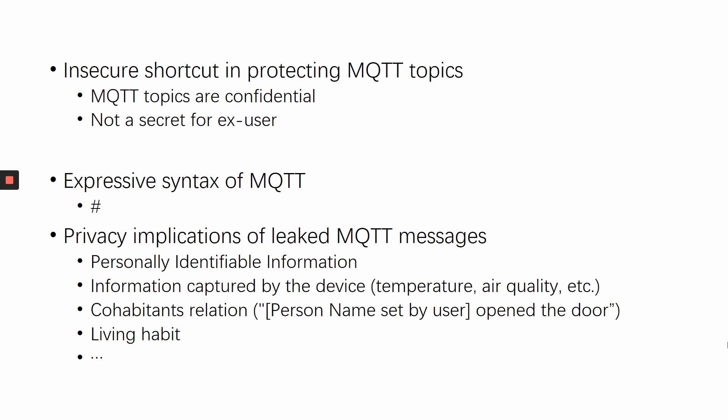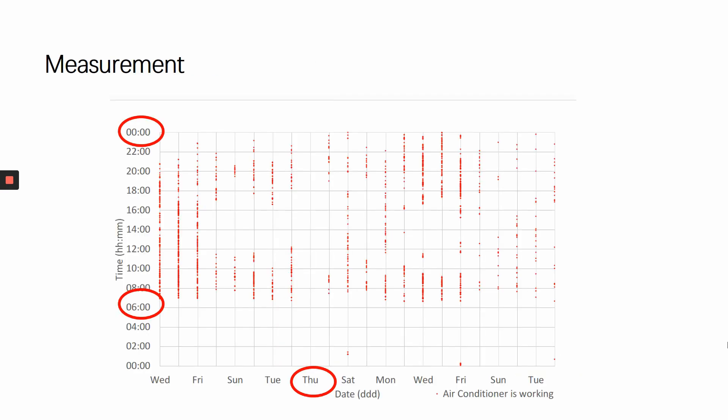With IRB approval, we analyzed the MQTT messages from a popular IoT cloud platform. We found messages include PII like email addresses, information captured by the device such as temperature, and even cohabitant relations. When observing device status for a long time, an attacker is able to infer the user's living habits. This figure shows the three-week status of an air conditioner. Red points mean the air conditioner is working. You can see it starts at 6 a.m. and ends at midnight. On Thursday, the air conditioner was shut down the whole day, which means the host may not have been at home that day.